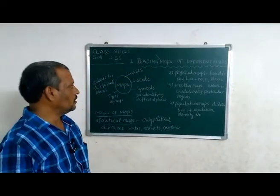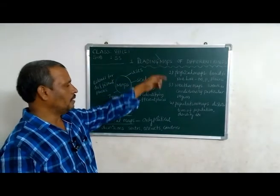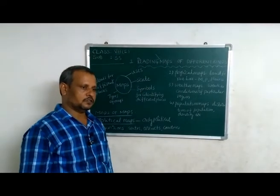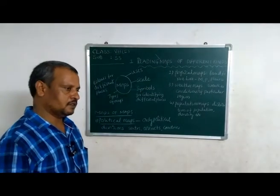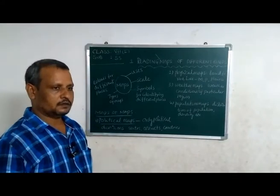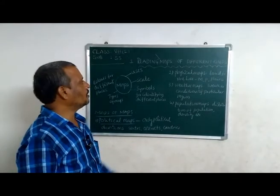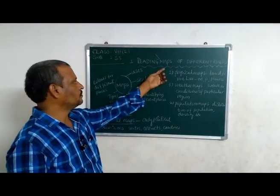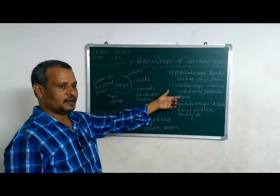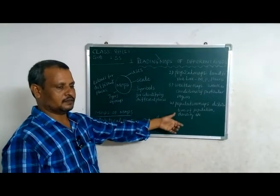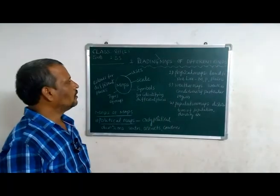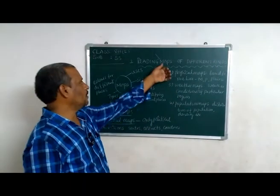Do you know what is the definition of a map? Maps are the spherical shape or surface of the earth drawn on a paper or any plane area. That is called a map.